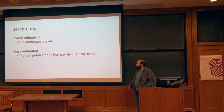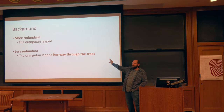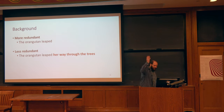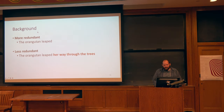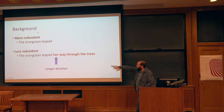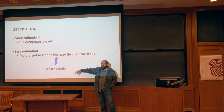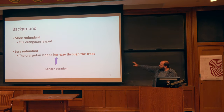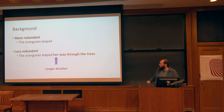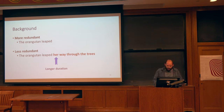The less redundant version would be if we attach to that the sort of baggage of the 'way' construction: 'the orangutan leaped her way through the trees.' This is less expected. And because of that, at the point of transition, we expect longer durations in speech. Because this is less expected, the speaker themselves will have some sort of difficulty, and they will balance that redundancy out by having low redundancy at the 'her' point and then giving some longer duration, which is prosodically redundant.